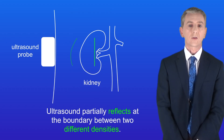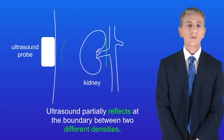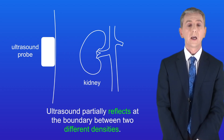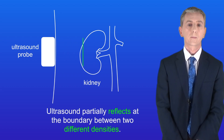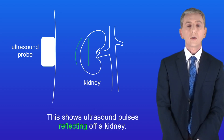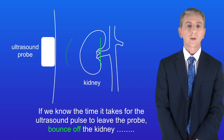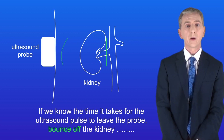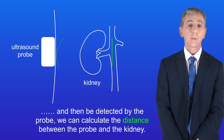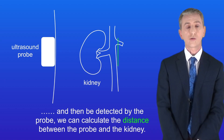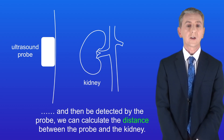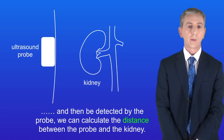One key feature of ultrasound is that ultrasound waves partially reflect at the boundary between two different densities. I'm showing you here ultrasound pulses reflecting off a kidney. If we know the time it takes for the ultrasound pulse to leave the probe, bounce off the kidney, and then be detected by the probe, we can calculate the distance between the probe and the kidney.